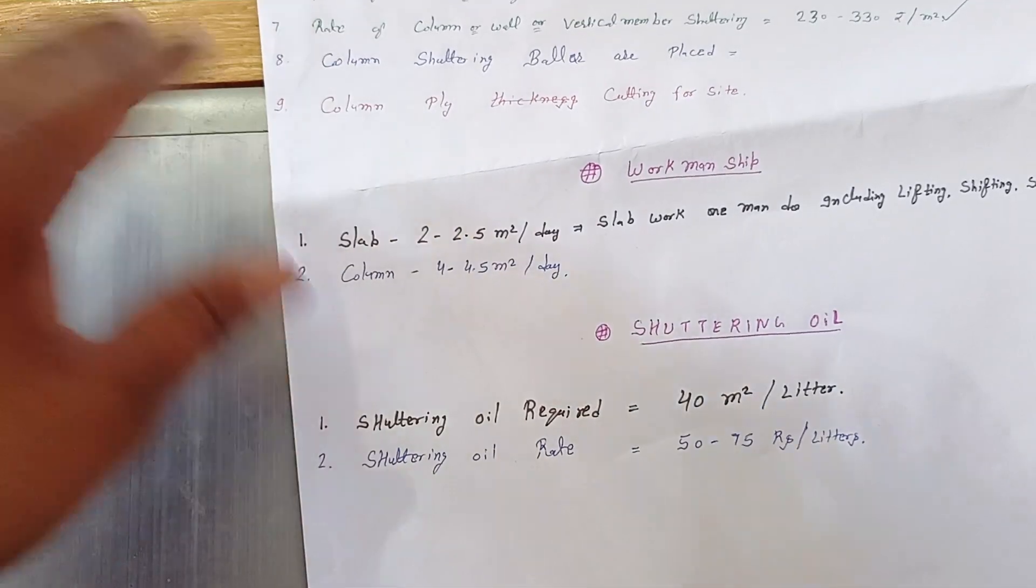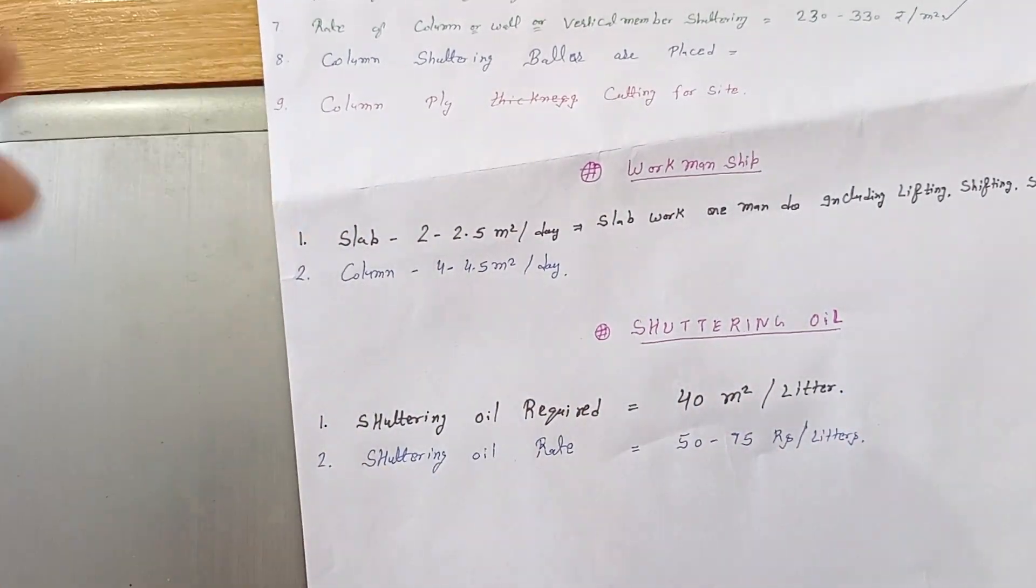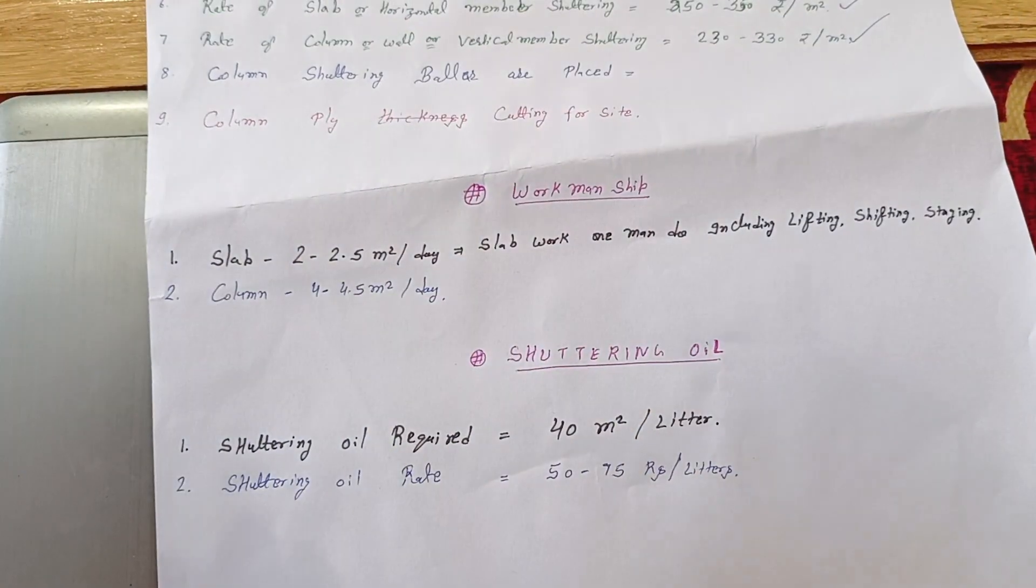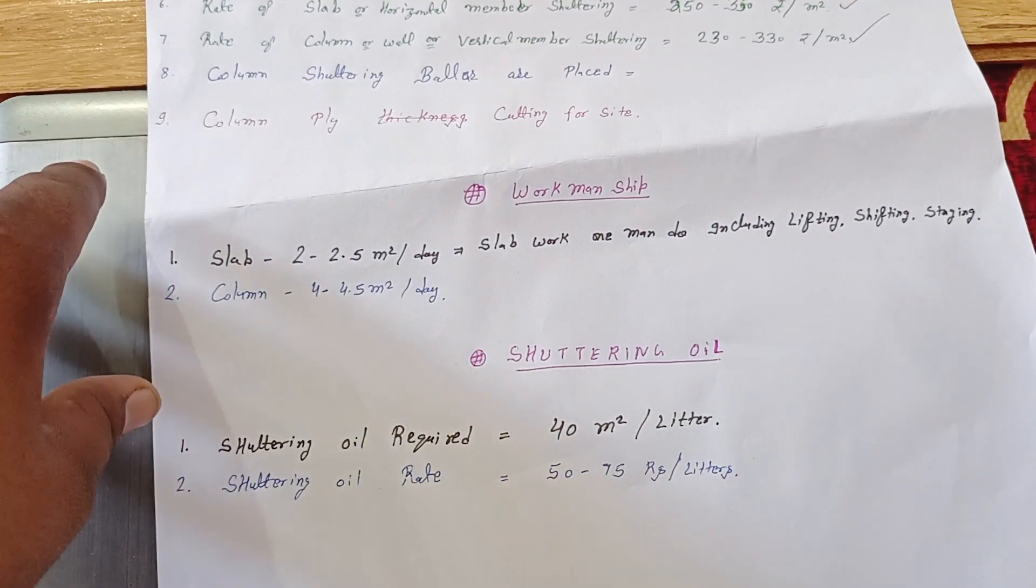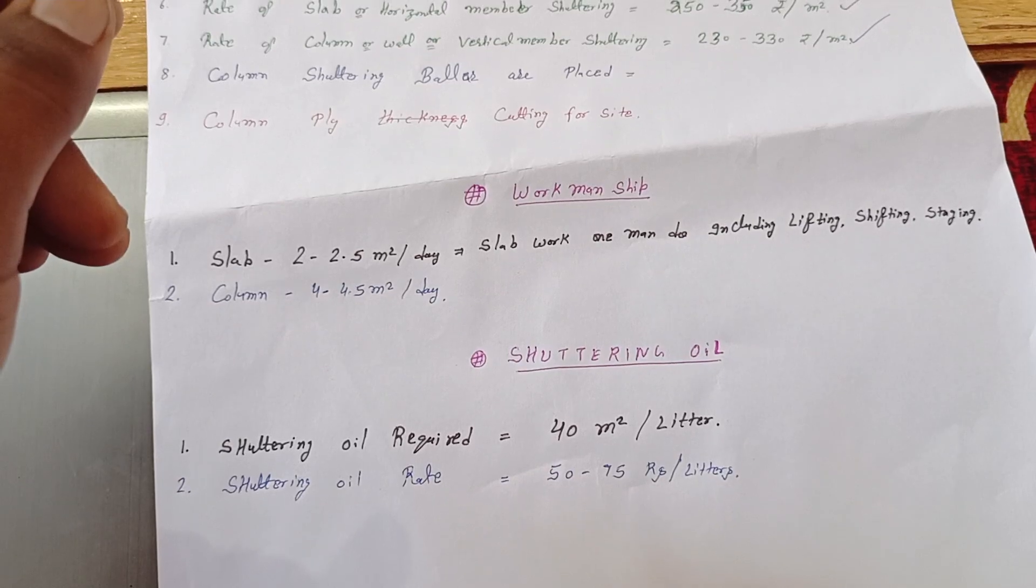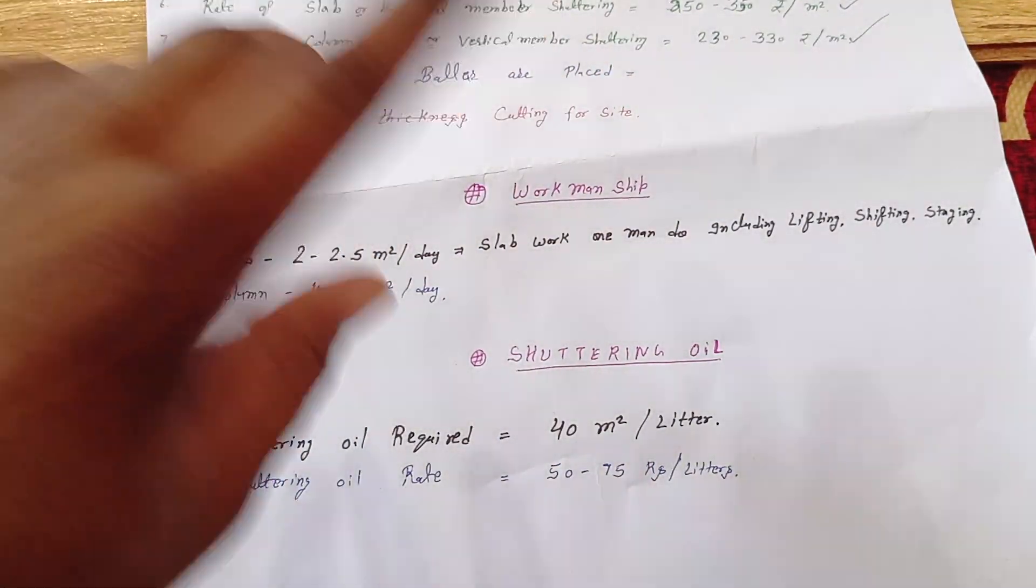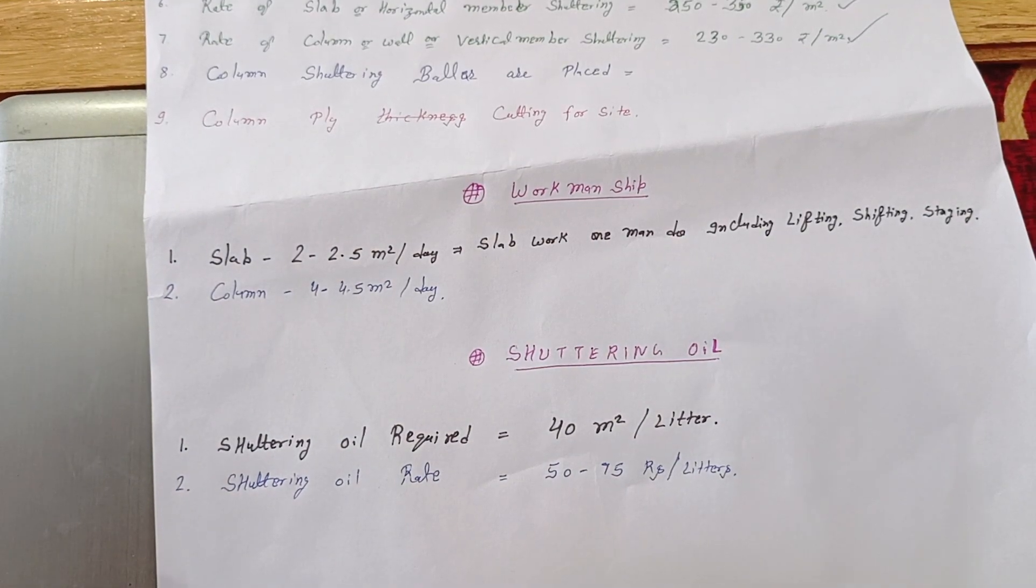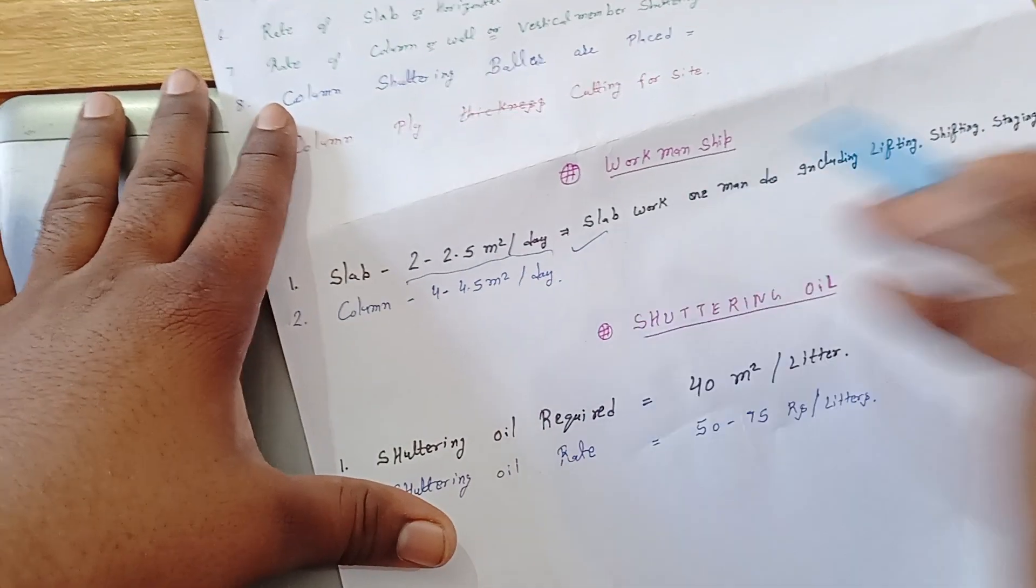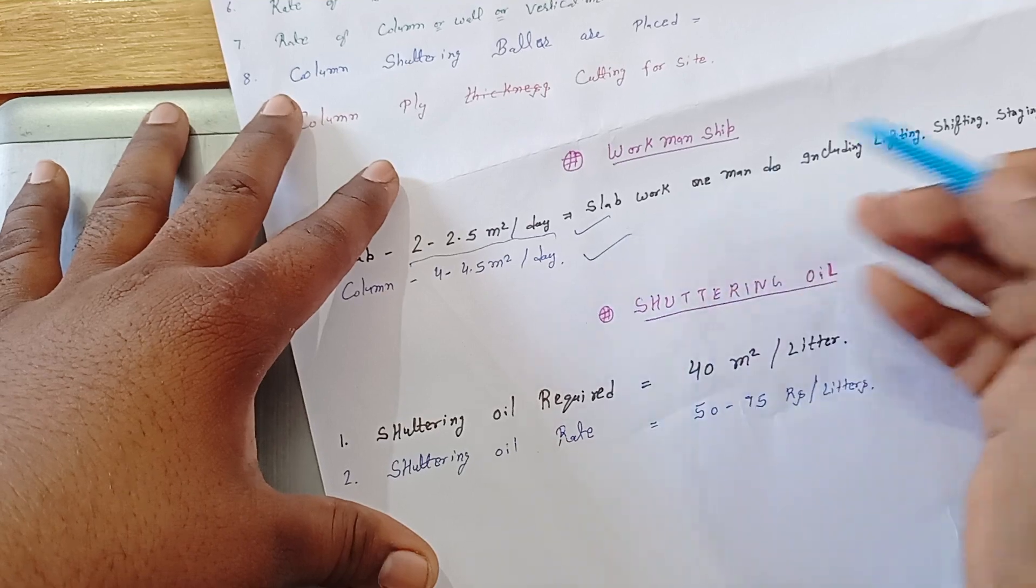Next they will ask workmanship in slab, one day, one person, how many work will we do. So slab in generally include lifting, shifting and staging. Lifting means one place to another place, lifting means one place to another or lifting means height in lift and shifting means, staging means for shuttering work we have to do staging for work, for the support, so 2 to 2.5 m² per day.